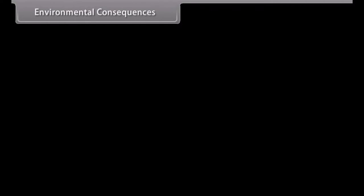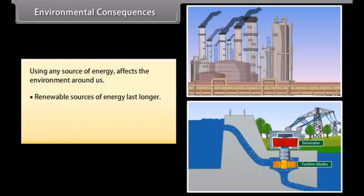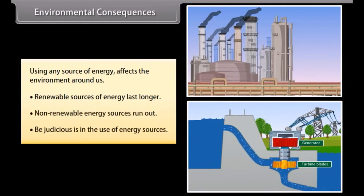Environmental consequences. Using any source of energy affects the environment around us. Therefore, before exploiting any energy source, ensure that it does not disturb the environmental balance and is harnessed judiciously. Renewable sources of energy last for as long as they keep generating, whereas non-renewable energy runs out. We have to be judicious in our selection of energy, the purpose of the energy being used, and the actual usage of the energy.